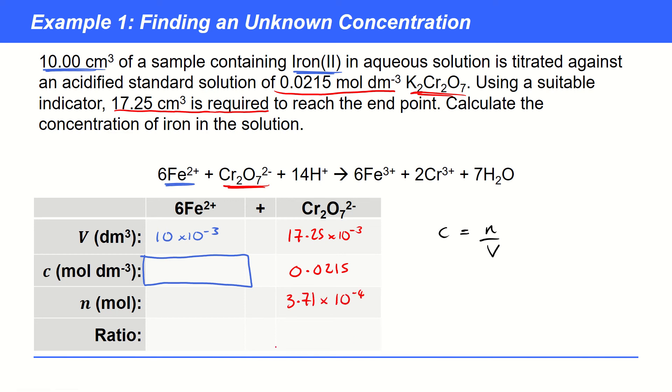Now there must be, from the mole ratio now, we can see we've got 6 times as much iron as dichromate, according to that mole ratio. So to get the moles of iron, I just simply multiply that number by 6. And I find that the value is 2.22525 times 10 to the minus 3. I simply took the dichromate value and multiplied by 6. And now I can stick that in the formula and I find out that the concentration is 0.22525.